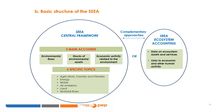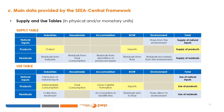In complement to the central framework, the UN also developed the SEEA ecosystem accounting. The SEEA accounts themselves are made up of two main types of tables. The first are the supply and use tables, which account for the different flows between the economy and the environment. They can be used to assess how an economy supplies and uses energy, water and materials, as well as to examine changes in production and consumption patterns over time.